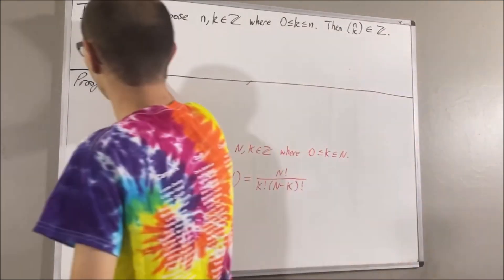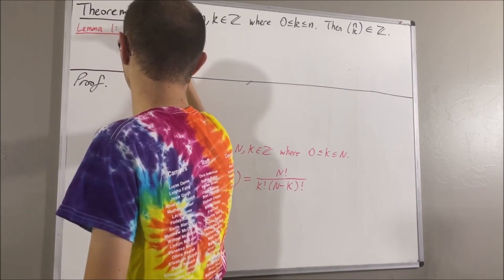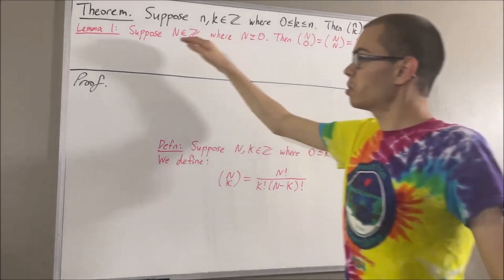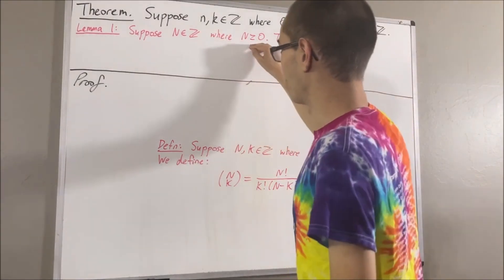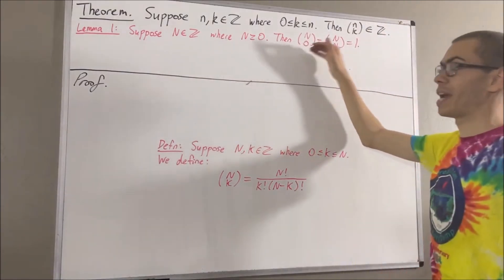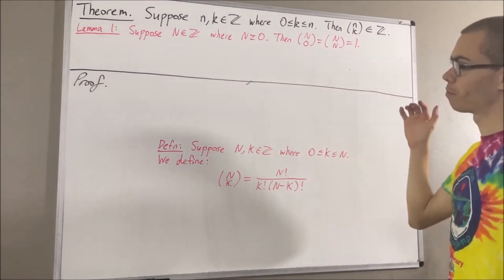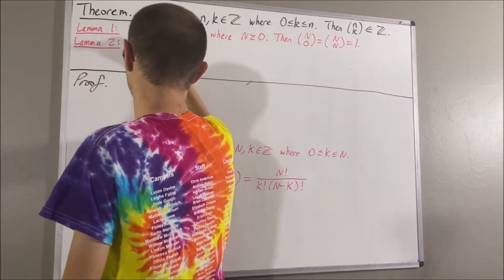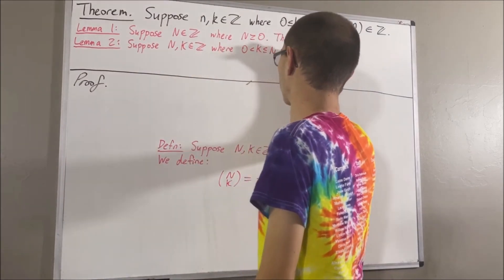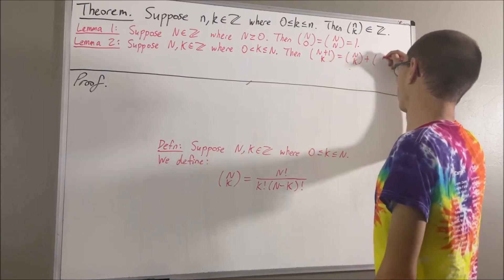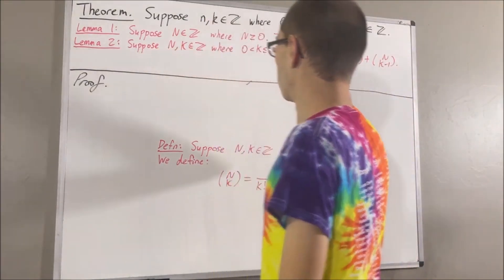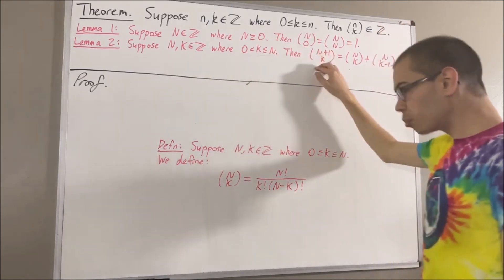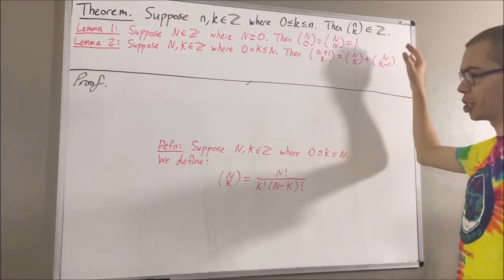Here's the first property. Suppose n is an integer where n is greater than or equal to 0. Then, n choose 0 and n choose n are both equal to 1. Here's the second property we're going to use. Suppose n and k are integers where 0 is less than k is less than or equal to n. Then, n plus 1 choose k is equal to n choose k plus n choose k minus 1.